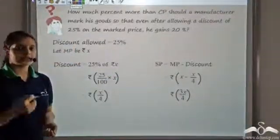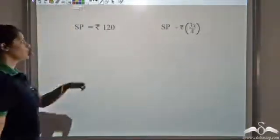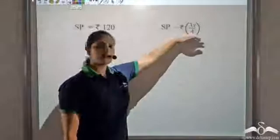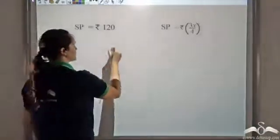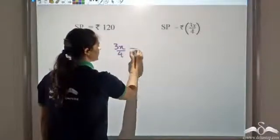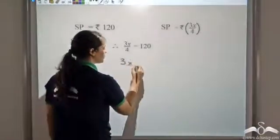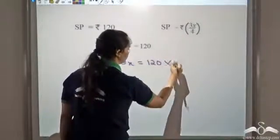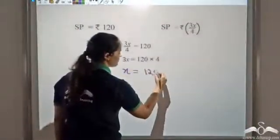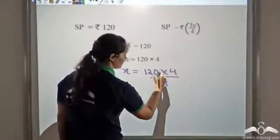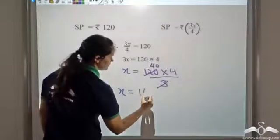Earlier we found that the selling price was 120 rupees, and now the selling price also turns out to be 3X by 4. Since both represent the selling price, they must be equal. Therefore, 3X by 4 equals 120. From here, 3X equals 120 times 4, and dividing by 3 gives X as 160.